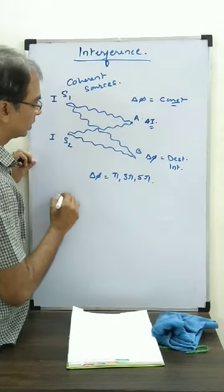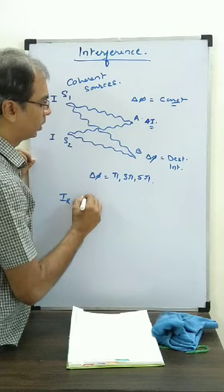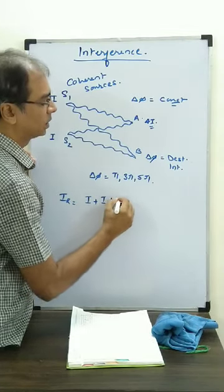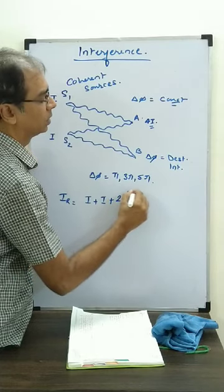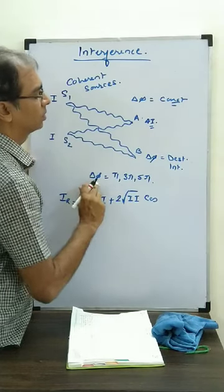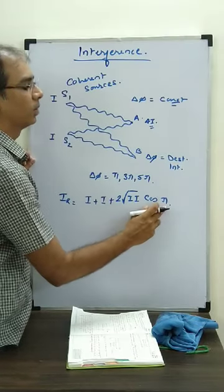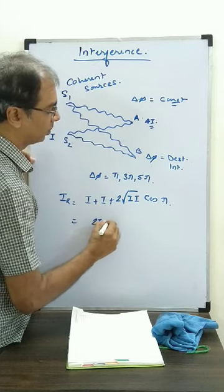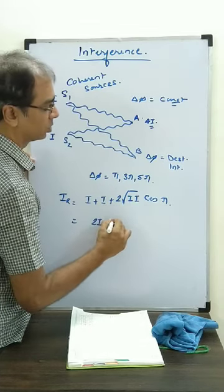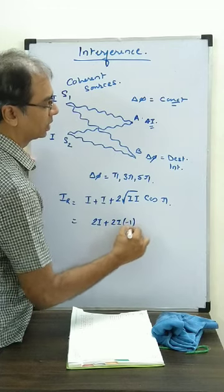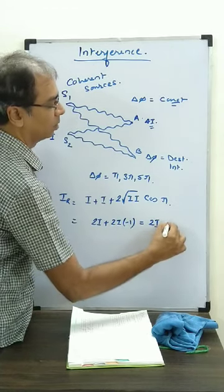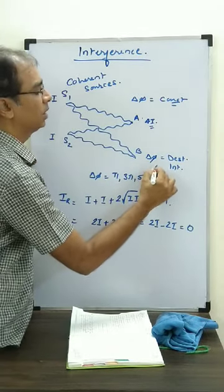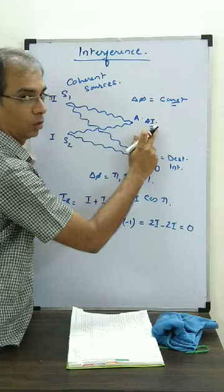What will be the resultant intensity? Using the resultant intensity formula: I1 plus I2 plus 2 root over I1 I2 cos delta phi. The cos phi value is minus 1. So what is coming? I plus I, that is 2I, plus 2 root over I squared, that is also 2I, times cos phi value minus 1. So we are getting 2I minus 2I equal to 0. Here resultant intensity is coming 0, and here resultant intensity is coming 4I.